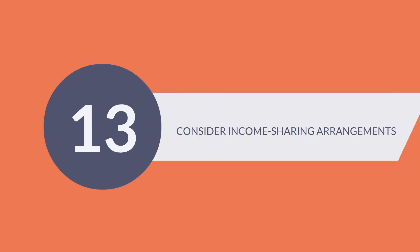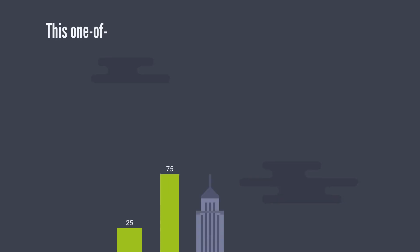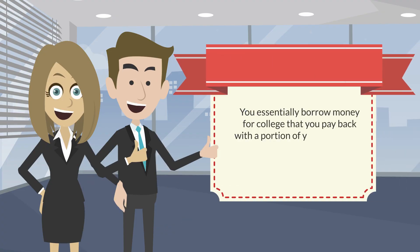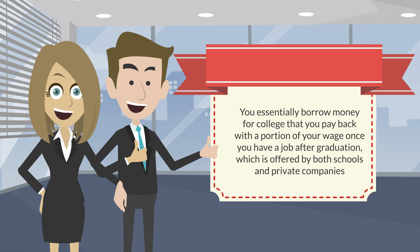13. Consider Income Sharing Arrangements. This one-of-a-kind alternative to student loans has grown in popularity in recent years. You essentially borrow money for college that you pay back with a portion of your wage once you have a job after graduation, which is offered by both schools and private companies.